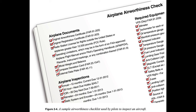10) FAA Form 337, Major Repair or Alteration (14 CFR Part 91, Section 91.417); and 11) inoperative equipment (14 CFR Part 91, Section 91.213).